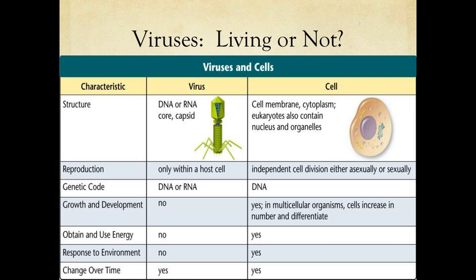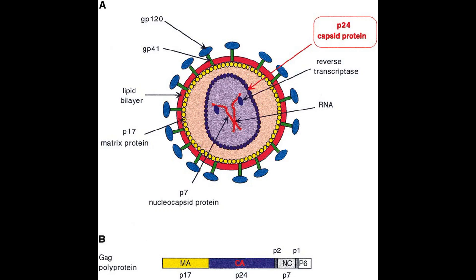Usually, for something to be considered alive, it requires meeting a set of criteria: requiring space, water, metabolites, evolving, being composed of cells, responding to stimuli, maintaining homeostasis, and metabolism. Viruses are acellular by definition, and as said before, only perform metabolism when they are inside of organisms.